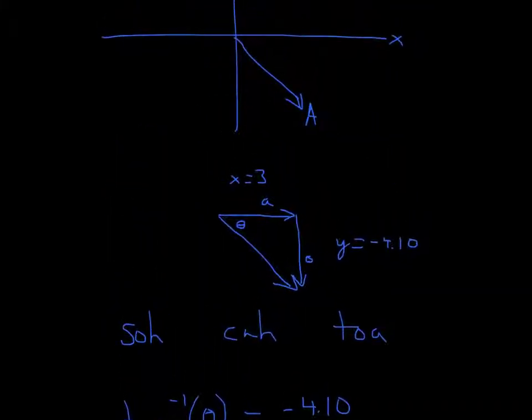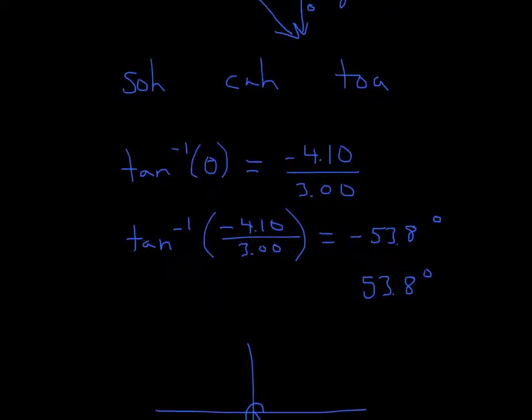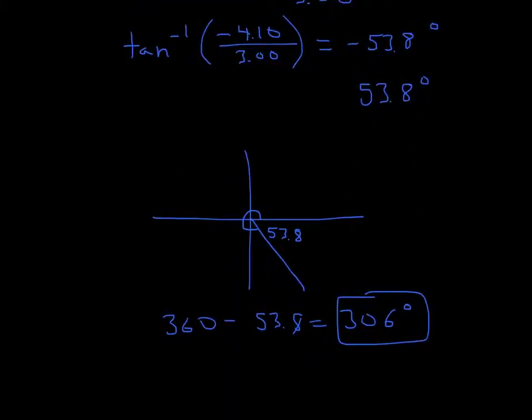Because here, this angle right here is not going to be a negative degree. It's going to be positive. So we just convert that negative to positive. Or what you can do is, since you know that you're solving for an angle, you don't even need this negative sign. You can just get rid of it. So if you're solving for an angle, you can actually get rid of the negative if you want, or just keep it and then replace it at the end. So now we know that the angle is 53.8 degrees.